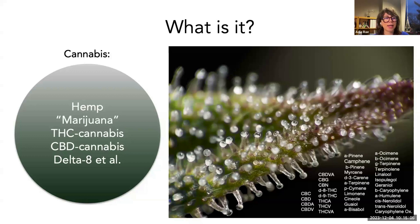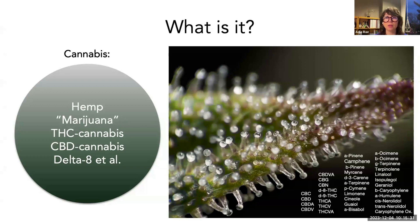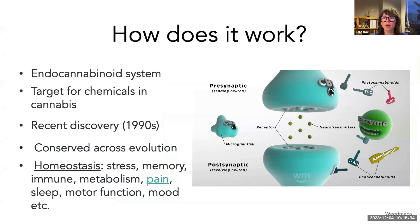We tend to lump cannabis all under one umbrella and say it's been shown to be effective for pain or reduce spasms in MS. But cannabis isn't one thing — it's not one medication, it's not one drug. It is a package for lots of other chemicals, all of which can have really important biological and medical effects inside of our bodies. That begs the question: how do all of these chemicals work inside of our bodies? They work by interacting with our body's own endogenous cannabinoid system.